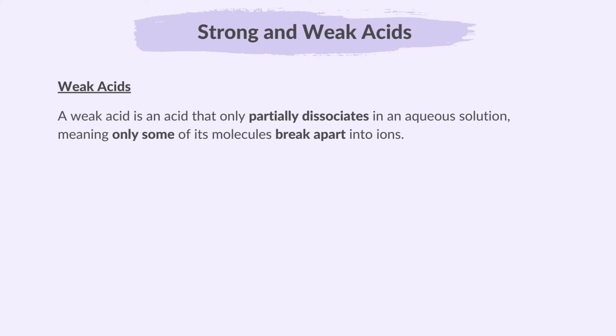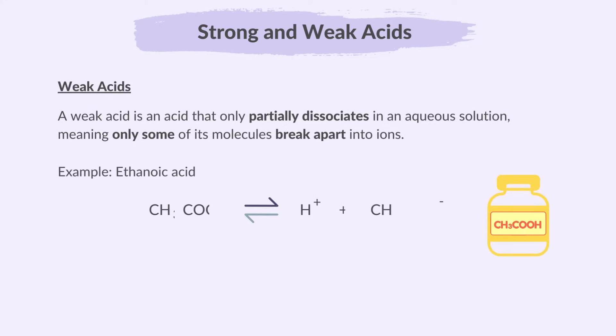A weak acid is an acid that only partially dissociates in an aqueous solution, meaning only some of its molecules break apart into ions. Ethanoic acid is a weak acid, as shown by its symbol equation — the breakdown is not complete, as indicated by the double arrow.